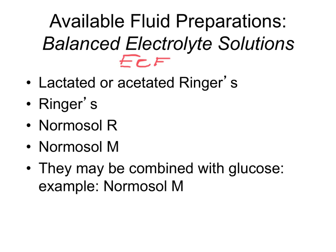We have lactated ringers or acetated ringers — acetated ringers may be used more in large animals. Ringers solution does not have the alkalinizing component of lactate or acetate. Normosol R has gluconate and acetate as alkalinizing agents. The reason these are alkalinizing is because they can all be converted to CO2 and therefore to bicarbonate within cells. Normosol M is a higher osmolarity solution used sometimes to maintain an animal, with higher amounts of potassium. Any of these solutions can be combined with dextrose — in fact, Normosol M is a combination of Normosol R with dextrose. These are the more common balanced electrolyte solutions; they're balanced because they look like ECF.